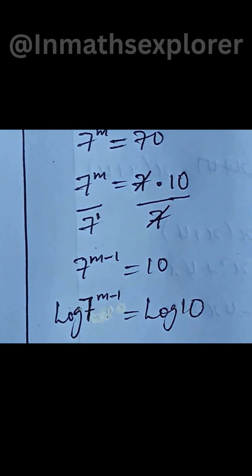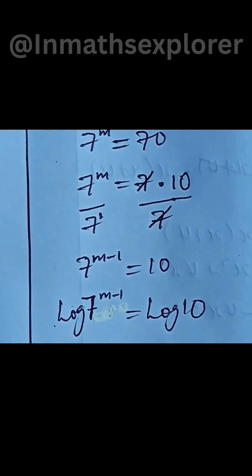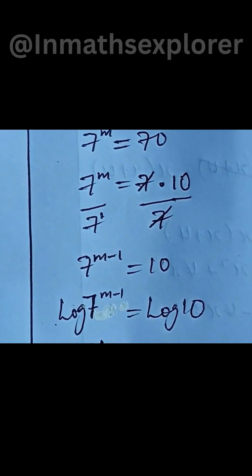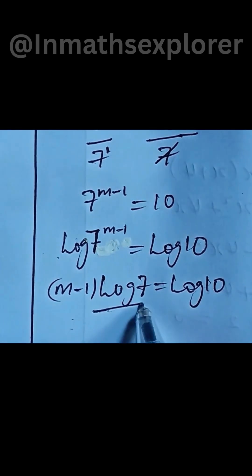And let's take the log of both sides. So m minus 1 will come down to the base at the left hand side. Then we can divide both sides by log 7.